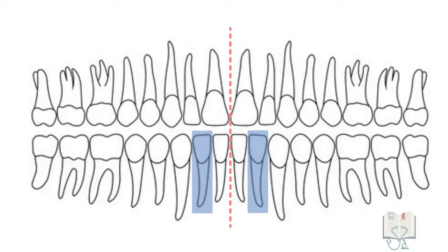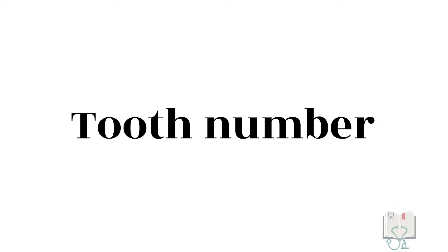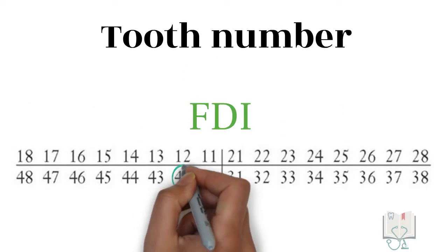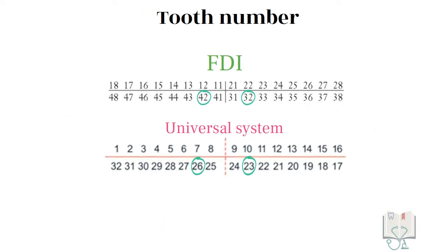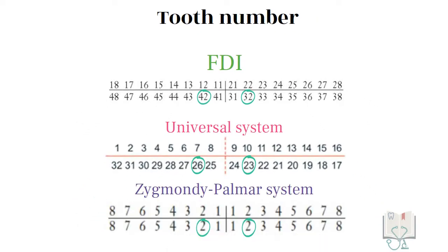Permanent mandibular lateral incisor is the second tooth from the midline. Its tooth number in FDI system is 42 and 32. In universal system it is 26 and 23 and in Zygmonde-Palmer system it is 2 with appropriate quadrant brackets.